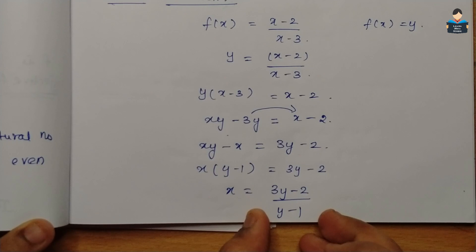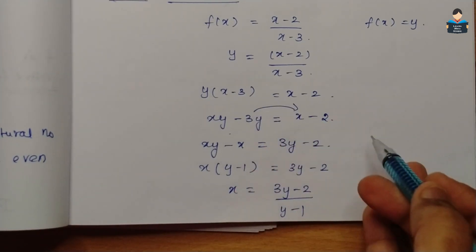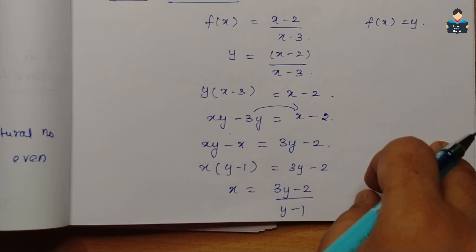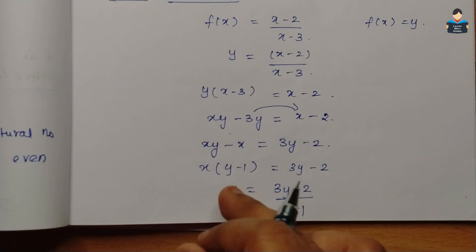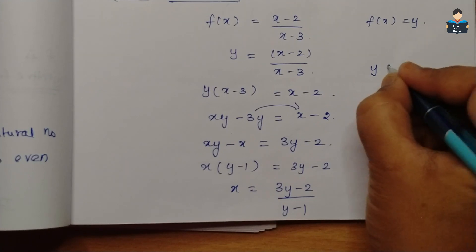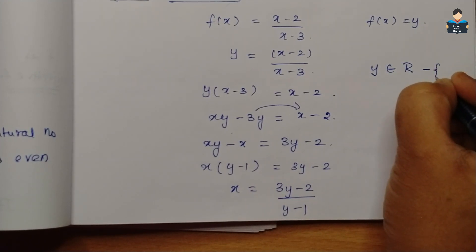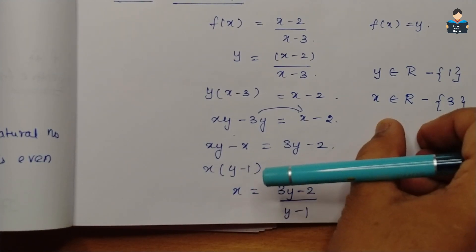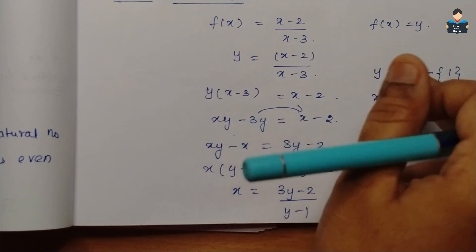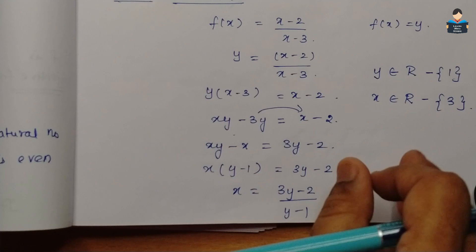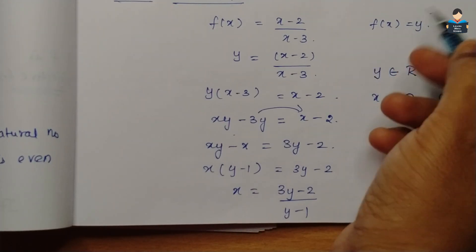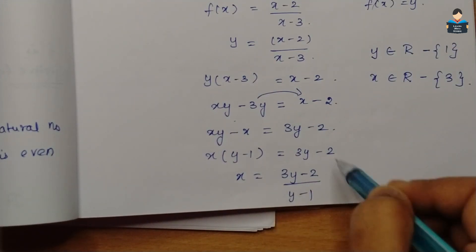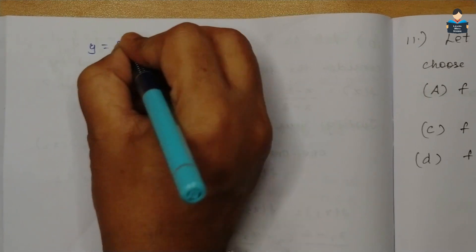We got x = (3y-2)/(y-1). The domain is real numbers except 3 and the codomain is real numbers except 1. For any y belonging to B (real numbers except 1), x belongs to A (real numbers except 3). We now verify by substituting x = (3y-2)/(y-1) back into f(x) = (x-2)/(x-3).